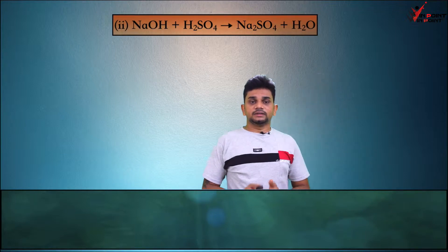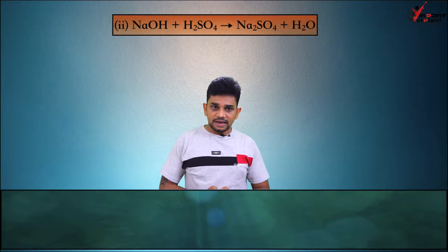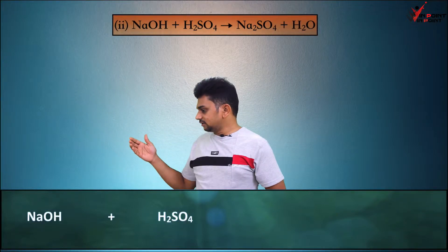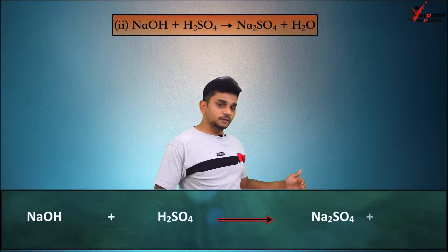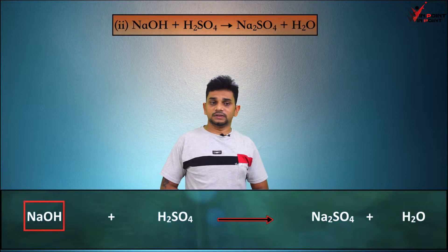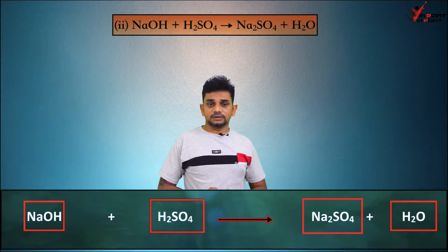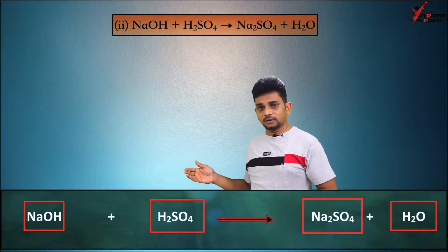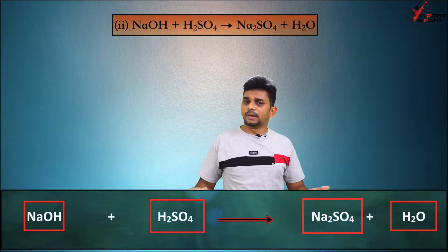Next equation: NaOH + H2SO4 → Na2SO4 + H2O. In this reaction, reactants are NaOH and H2SO4, and products are Na2SO4 and H2O. We make boxes and first count the SO4 group. H2SO4 has one SO4 and Na2SO4 has one SO4 — it is balanced.